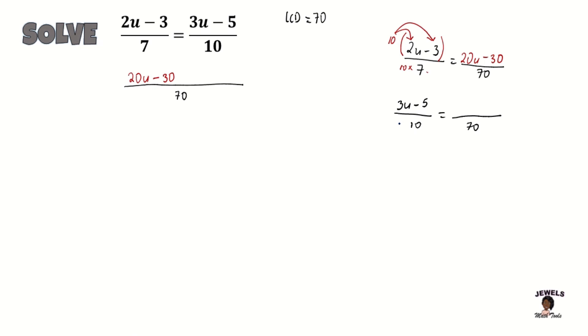We're looking for that number that when we multiply 10 by it, it's going to give us 70. We know that 7 times 10 is 70, so everything in our numerator will be multiplied by 7.